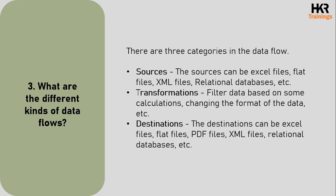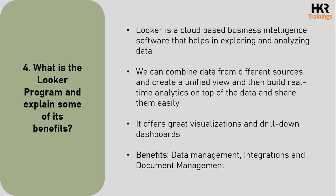The next question: what are the different kinds of data flows? There are basically three categories in the data flow. The first one is sources — sources can be Excel files. The third type of data flow is destinations. Destinations can be Excel files, flat files, PDF files, XML files, relational databases, and much more.